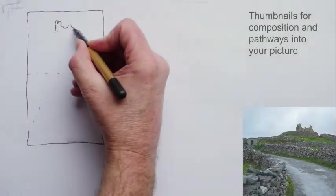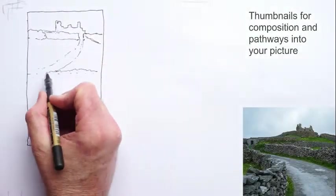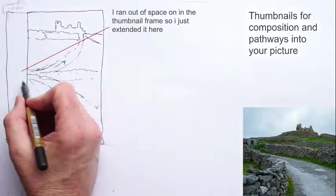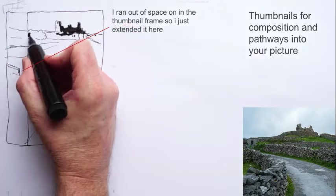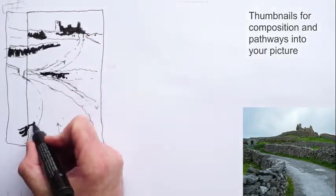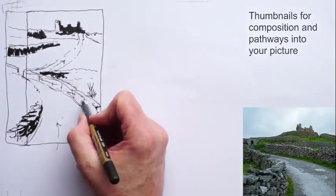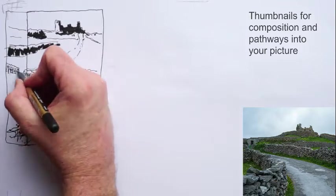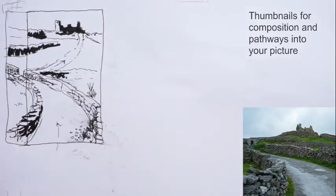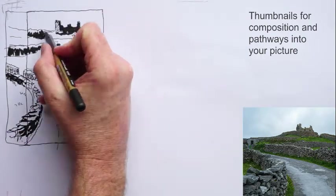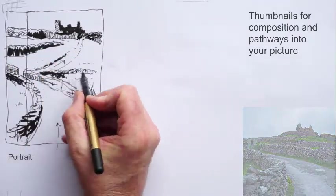So our next exercise is about thumbnails. Now what thumbnails are, just very basic, very quick sketches. Little thumbnail sketches they're known as. So you don't have to commit a lot of time to them. But you just throw in the basic shapes of your scene and maybe even the basic tonal values. So the darkest areas and the mid-tones and then the lightest areas. But it's also a good way to kind of see where the pathways are in between to get into the picture.